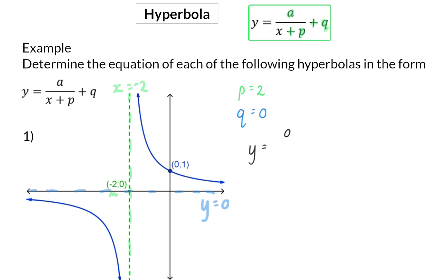So, in the equation, we now have the p value as plus 2 and the q value as 0, and now we need to determine the a value.